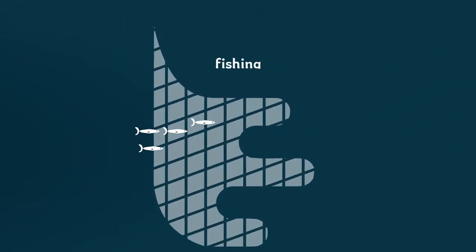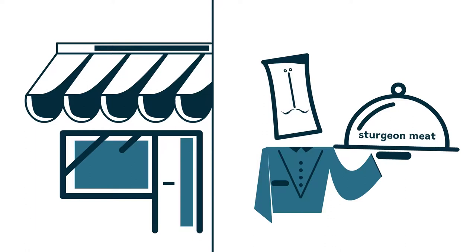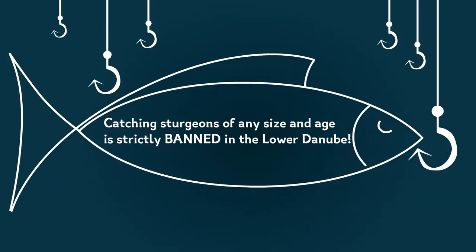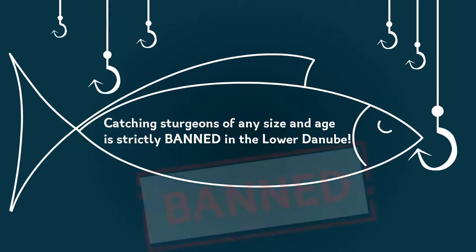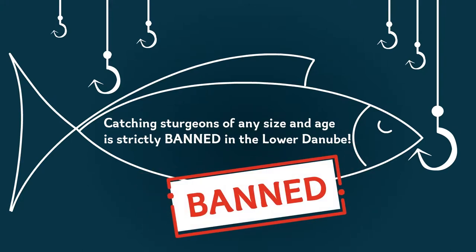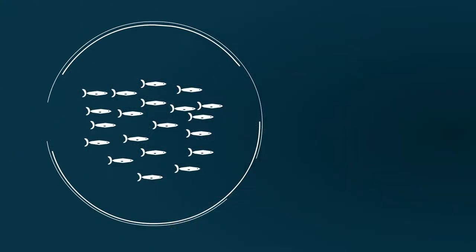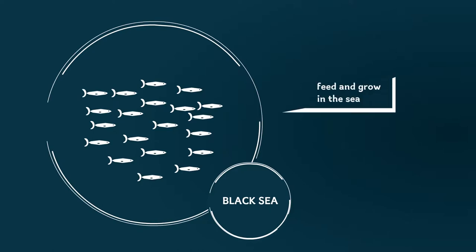And when they finally reach the sea, sturgeons may get caught in fishing nets. Apart from caviar, sturgeon meat is also a delicacy, so buyers are easily found. Remember, catching sturgeons of any size and age is strictly banned in the lower Danube. The sturgeons that survive this long journey continue their life in the sea. They feed there, grow up, grow old, and during certain periods in their life, they repeat this whole journey again and again.